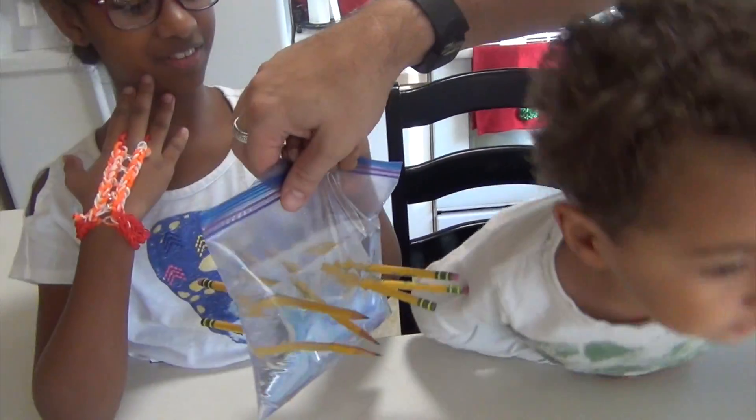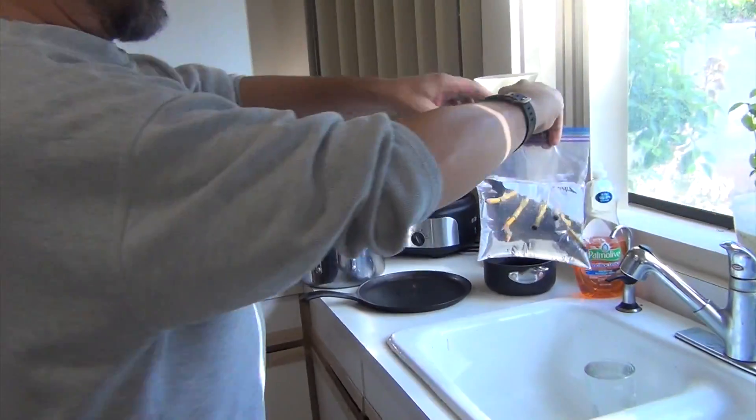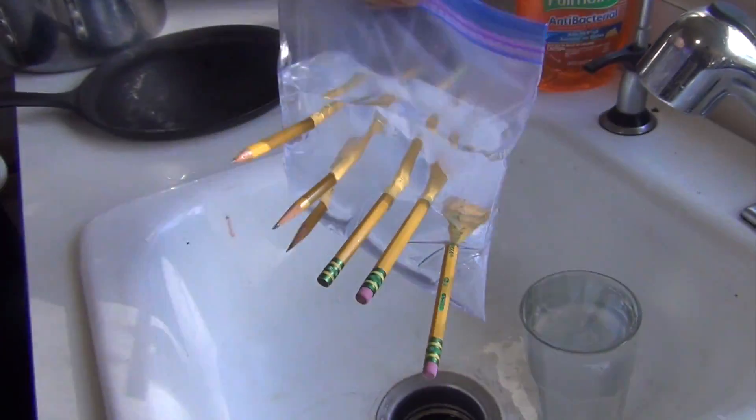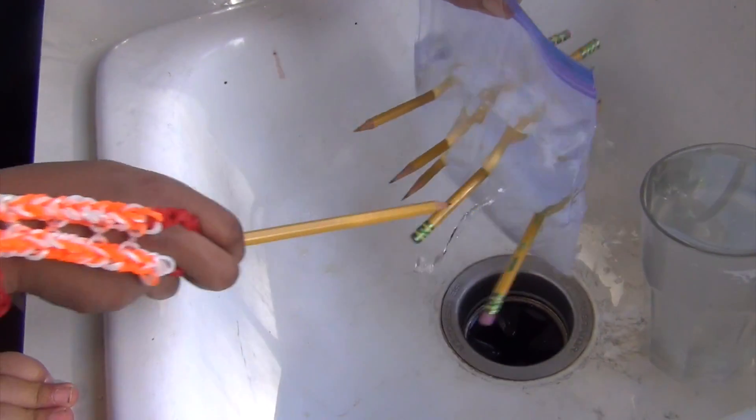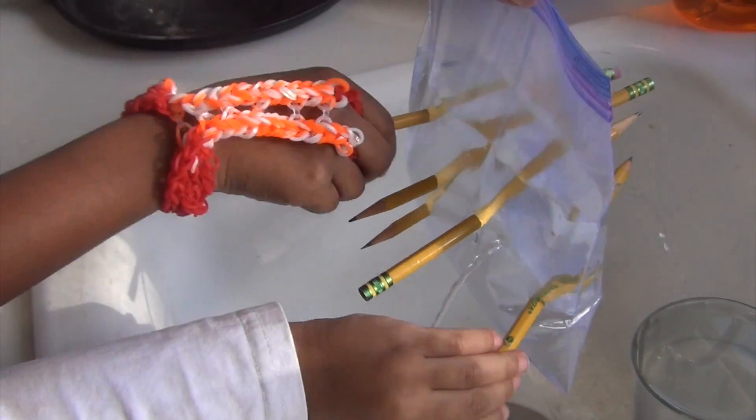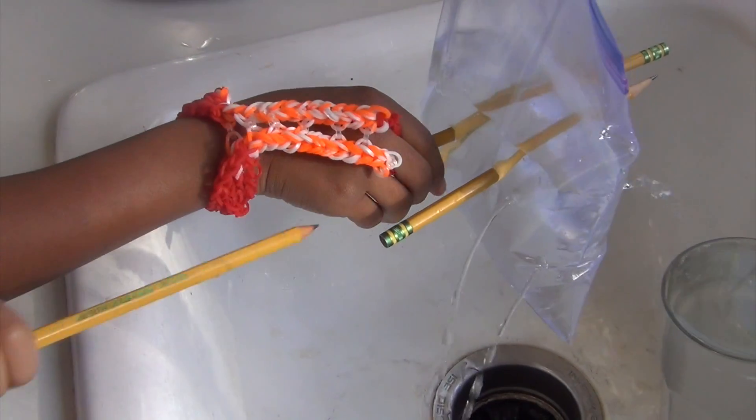Hey, you want to see something really cool? What, what, what? Come over here. Come over here. Since the pencil is what's keeping it from leaking, pull one of those pencils out, Aaliyah. It's going to leak. Pull another one out. BJ, pull one out. Go ahead. Reach in, both of you. You can. Keep going. Get them all out. It just leaks all of a sudden.